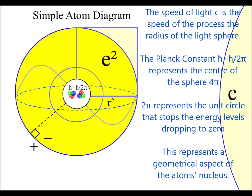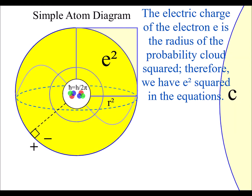Within this theory, each constant has a geometrical aspect within this process. The speed of light c is the speed of the process — the radius of the light sphere. The Planck constant h represents the center of the sphere, and 2pi represents the unit circle that stops the energy levels dropping to zero. The electric charge of the electron e is the radius of the probability cloud squared; therefore, we have e squared in the equation.